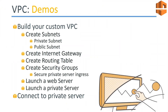What we are going to do now as a demo is create a custom VPC. We are going to create public and private subnets, create an internet gateway so our public subnets can talk to the internet. We'll ping Google or set up a web server and try to access it through the public subnets. We'll set up the routing table, web security group, and database security group, and see whether we can reach the private server without internet access.